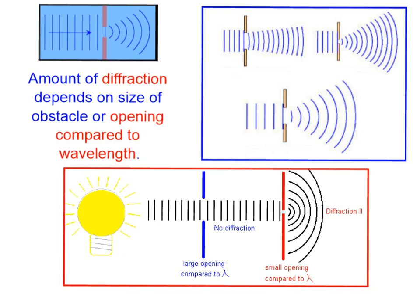The amount of diffraction depends on the size of the obstacle or opening compared to the wavelength. If we have a really large opening compared to the wavelength, we don't get diffraction. However, if we have a very small opening compared to the wavelength, we get a lot of diffraction. It's not all or nothing — we can get a variable amount in between. Narrowing the gap with the same wavelength increases diffraction.